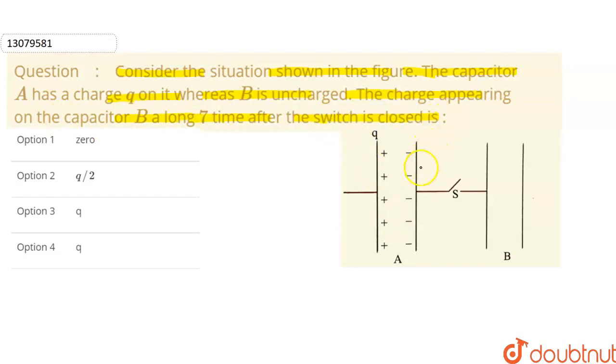In this question, consider the situation shown in the figure. We have a figure in this way. Here, the capacitor A has a charge Q on it, whereas B is uncharged.